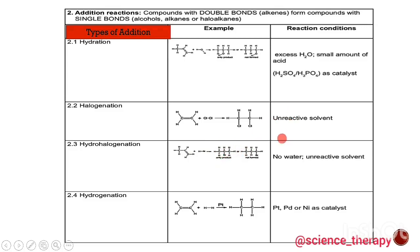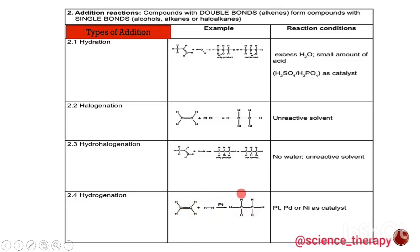The reaction condition for hydrohalogenation is no water and an unreactive solvent. The last type of addition reaction is hydrogenation — from the name we are adding hydrogen. We have an alkene with a double bond reacting with two atoms of hydrogen. The double bond breaks to allow in the hydrogen atoms, and our alkene is converted to an alkane, for example ethene changing to ethane.